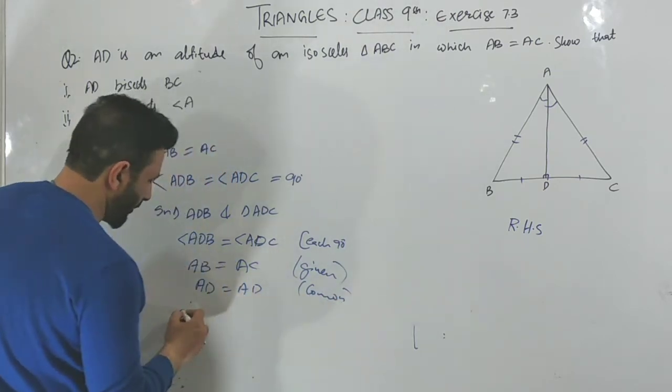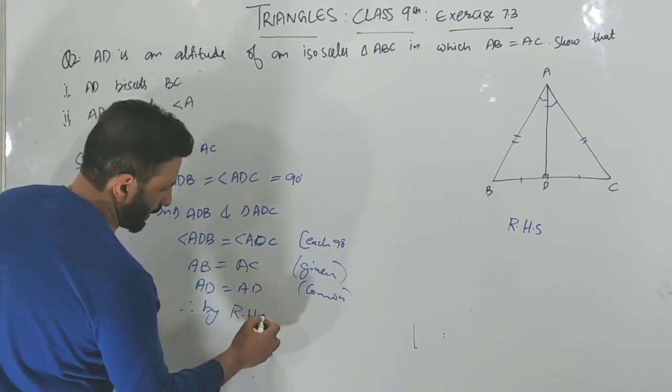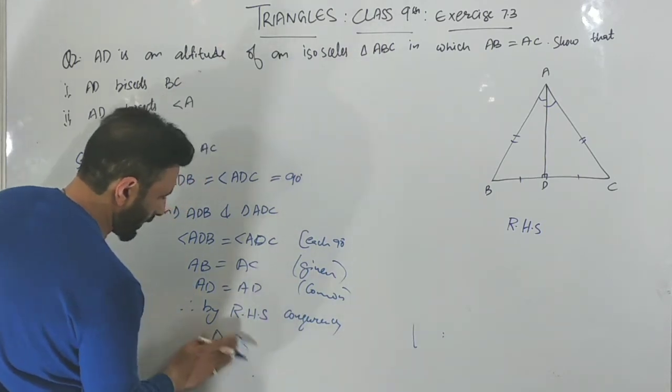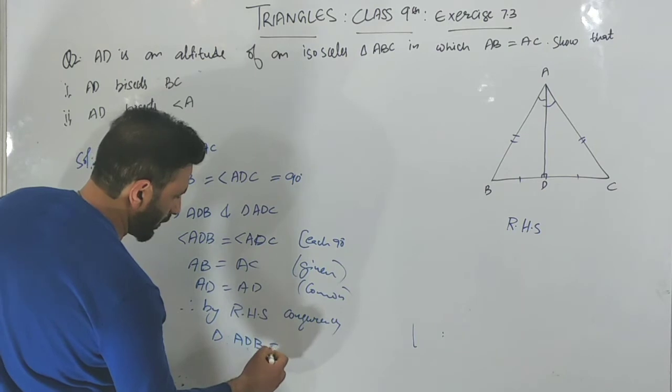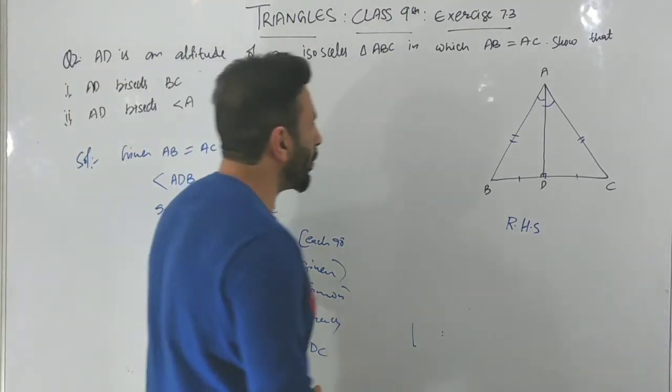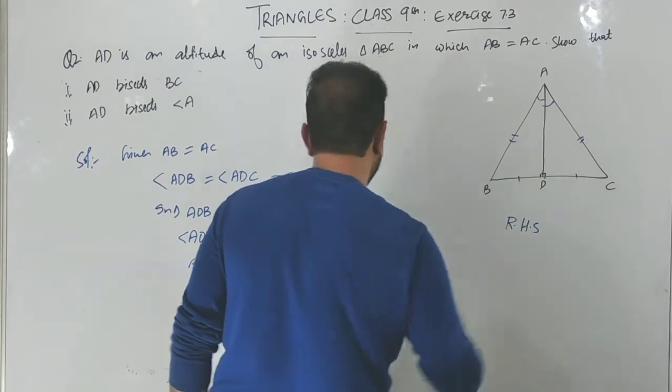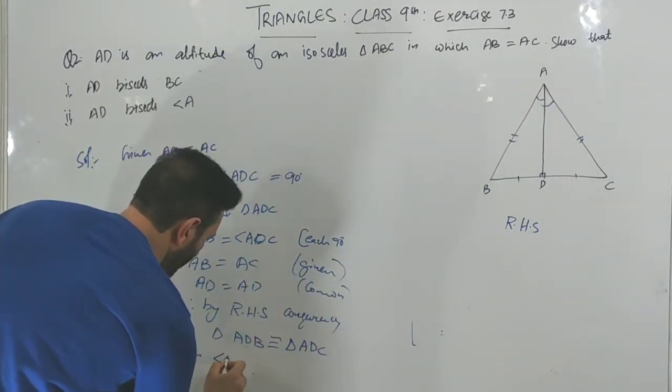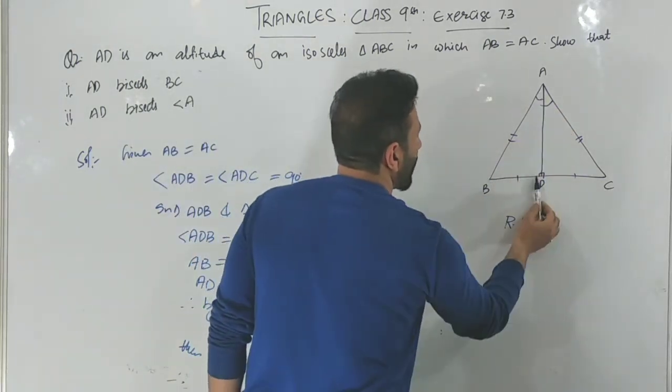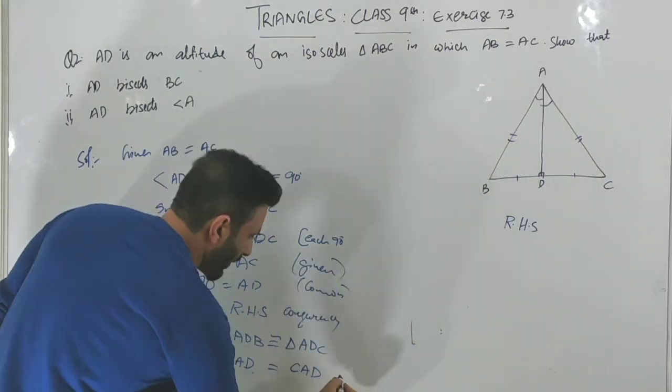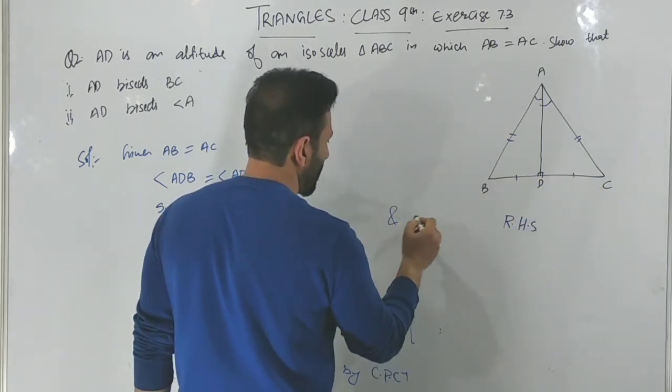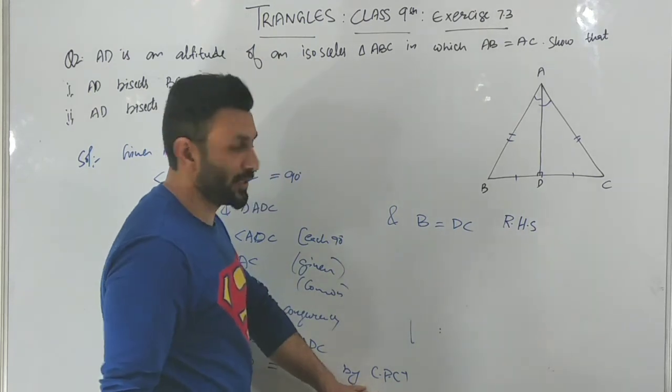Therefore, by RHS congruency, triangle ADB is congruent to triangle ADC. When triangles are congruent, then angle BAD equals angle CAD by CPCT. And BD is equal to DC, same reason, by CPCT.